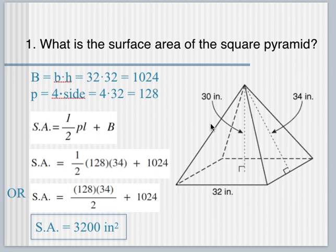You plug it all in, and you should get 3,200 square inches. Quick note, if your work looks right but you're not getting this answer, it could be that you're dividing by 2 after the base in your calculator. And that would throw things off because that would half the base. You don't half the base, you just want to half this. So you could either type in your calculator 0.5 times 128 times 34 plus 1024, or you could type 128 times 34 divided by 2 here, and then the plus 1024. If you divide by 2 at the end, it's going to mess up your answer.